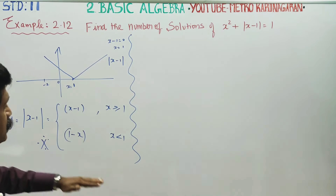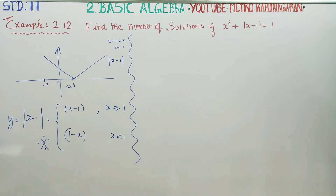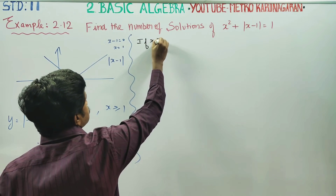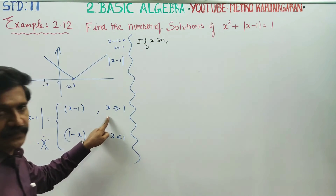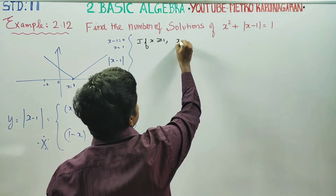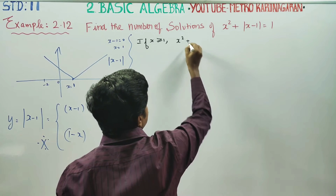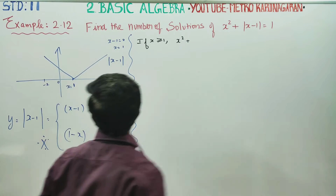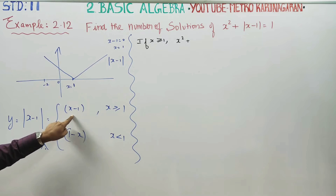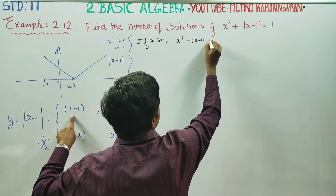Coming to the sum now. This is an introduction about modulus of x-1. First condition: if x is greater than or equal to 1, the number of solutions equals 1. In that case, modulus of x-1 can be written as x-1, and the equation becomes x² plus x-1 equal to 1.